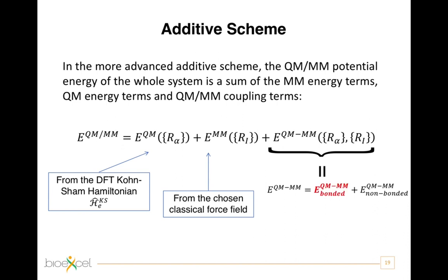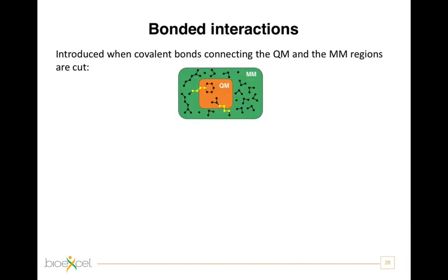The bonded part describes the covalent interactions between quantum atoms — that is the atoms in the quantum region — and classical atoms in the MM region. Therefore, this bonded part is present only when the boundary between the quantum and classical regions cuts a covalent bond connecting a quantum atom to a classical atom, as shown in the picture here, if you look at the yellow fragments.